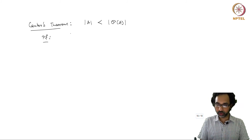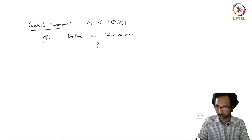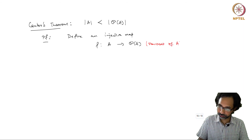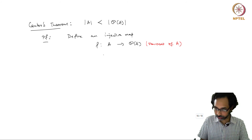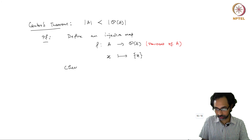It is easy to produce an injective map. We can define an injective map f from A to the power set of A — the set of all subsets — where this map takes an element x of A to the singleton {x}. One can easily check that this is an injective map.